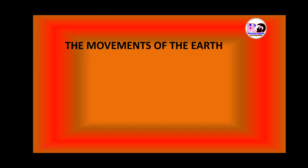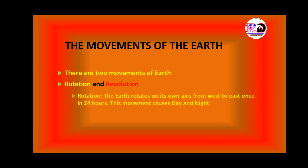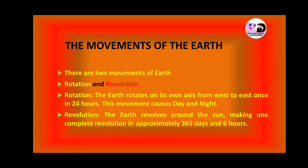The next point to discuss is the movements of the earth. There are two movements of the earth: rotation and revolution. Rotation — the earth rotates on its own axis from west to east once in 24 hours, and this movement causes day and night. Revolution — the earth revolves around the sun making one complete revolution in approximately 365 days and 6 hours.